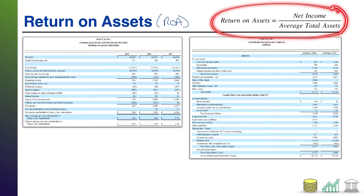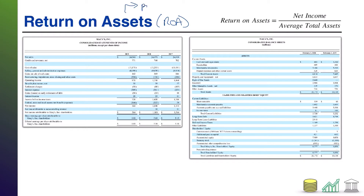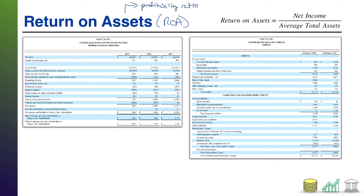Return on assets equals net income over average total assets. Net income is the bottom line profit of the company. Your average total assets are the items you have on hand that are supposed to generate profit for the company. So really what this is telling you is about the profitability of your assets — it's a profitability ratio saying, do those things that are supposed to make the company money actually do so?